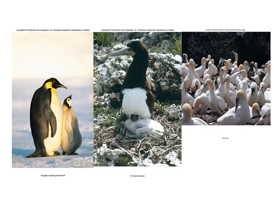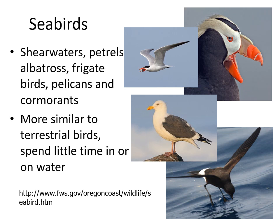Here are some seabirds — including what looks like an emperor penguin with its chick, a masked booby, and a blue-footed booby. There is also another group of birds: shearwaters, petrels, albatross, frigatebirds, pelicans, cormorants, and seagulls. They are more similar to terrestrial birds and don't spend as much time in the water, though many can, and they generally hunt in the ocean for fish.